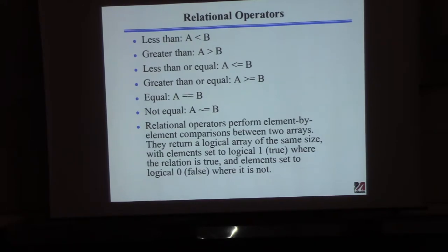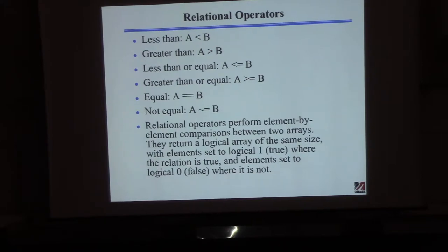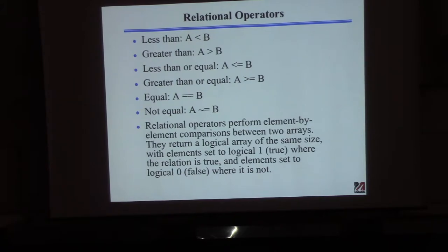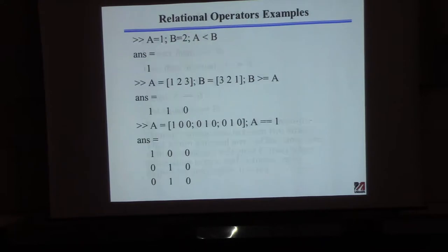When you issue one of these commands, you get back an answer that depends on whether the condition is true or not. If A and B are defined and A is less than B, this will give you an answer of one — a logical answer. If A is greater than or equal to B, it'll give you back zero. If A and B are scalars you get back a single answer; if they're vectors you get back a vector of answers; if they're matrices you get back a matrix, comparing elements one by one.